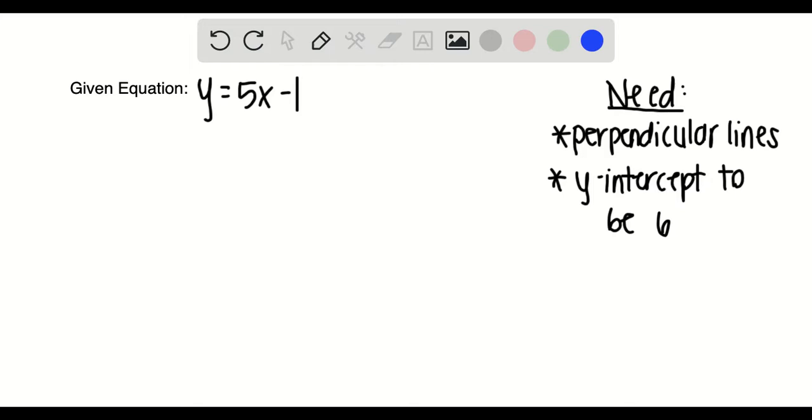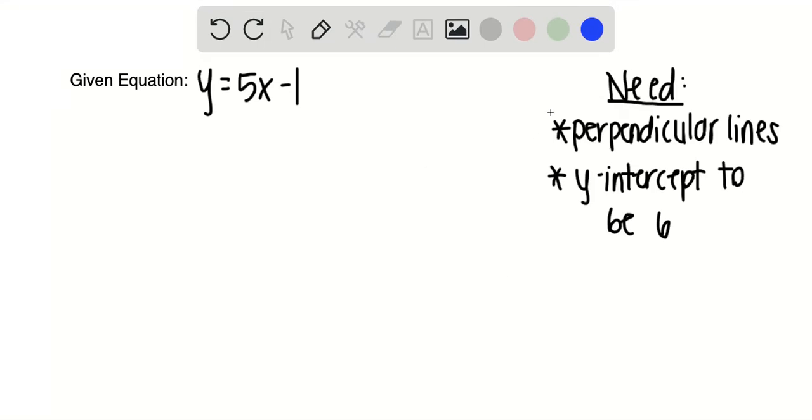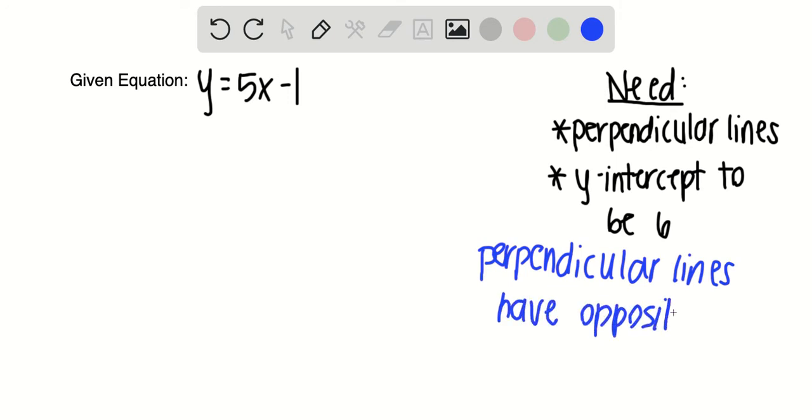In this particular problem, we are given the equation y = 5x - 1. This question is asking us to write an additional equation whose line is perpendicular to the given one and has a y-intercept of 6. Keeping in mind that perpendicular lines have opposite reciprocal slopes.